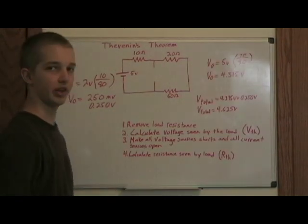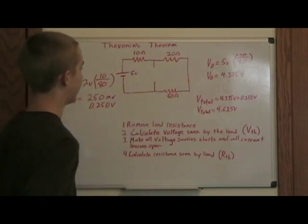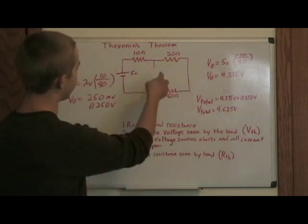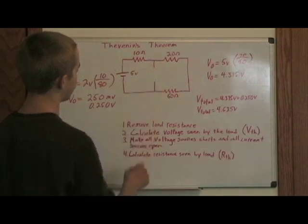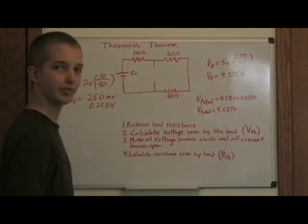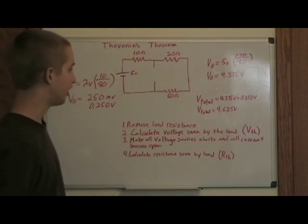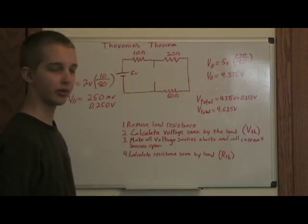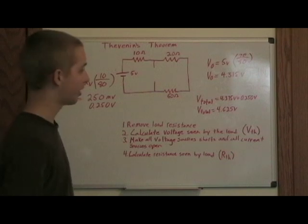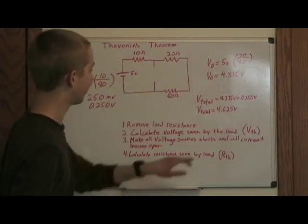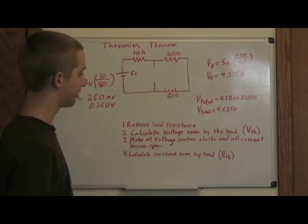Okay, now I did that same thing for the other battery, the 2 volt battery. And I calculated the voltage across these two resistors for the 5 volt battery. And it turned out to be 4.375 volts. Now the only thing you need to do to calculate the voltage for when both batteries are in effect is add those two voltages together. It turns out to be 4.625 volts.